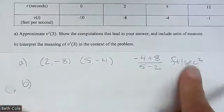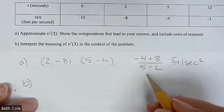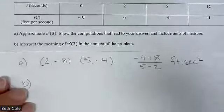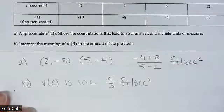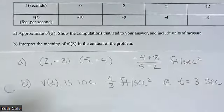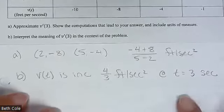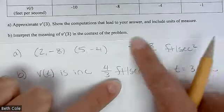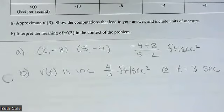Letter B: interpret the meaning of that. I would simplify it down — the numerator would be 4 and the denominator would be 3, so 4/3 is a positive number, which means velocity is increasing 4/3 feet per second squared. You have to say one other thing to get the point, which is at time t = 3 seconds. Positive means increasing, negative means decreasing. So velocity is increasing 4/3 feet per second squared at time three seconds. That's usually only worth one point as well.